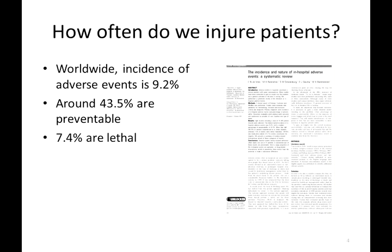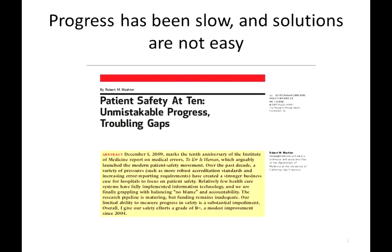Consider for example the challenge of keeping patients safe. The evidence is that it's very difficult to keep patients safe in hospital. One of the best systematic reviews suggests the incidence of adverse events is around 9% in hospitals worldwide — patients have approximately a 1 in 10 chance of being injured when admitted. We reckon that something like half of those events are preventable, so there's huge potential for improvement, particularly as around 7% of adverse events have a fatal outcome. Progress has been slow and solutions are not easy, as Bob Wachter's excellent piece has identified.